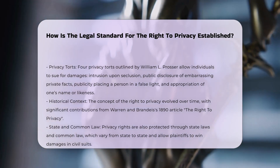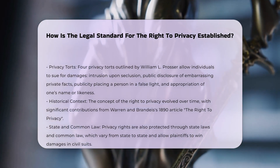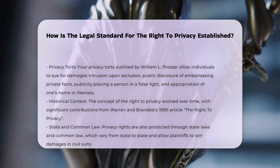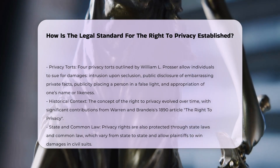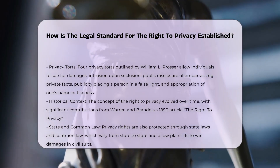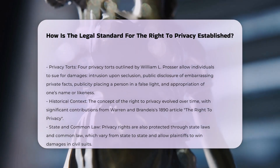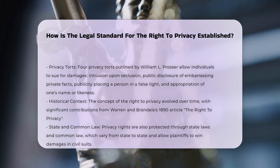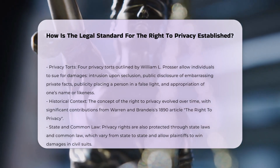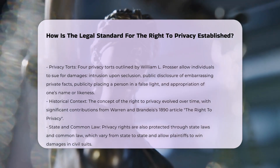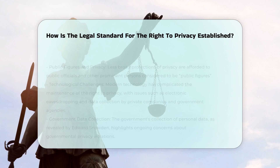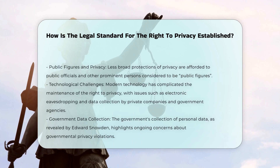Privacy torts: In 1960, William L. Prosser outlined four privacy torts that allow individuals to sue for damages resulting from privacy violations: intrusion upon seclusion, public disclosure of embarrassing private facts, publicity placing a person in a false light, and appropriation of one's name or likeness.